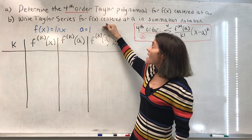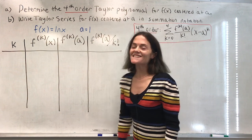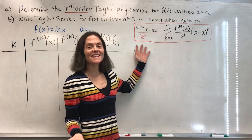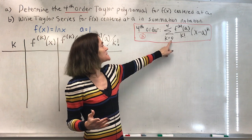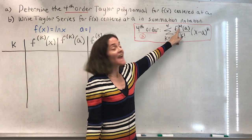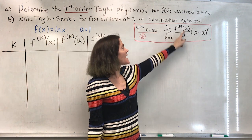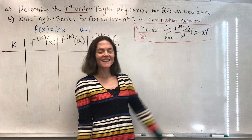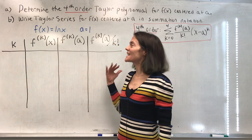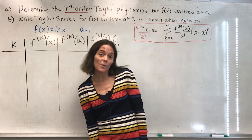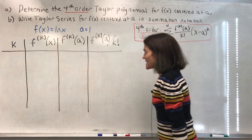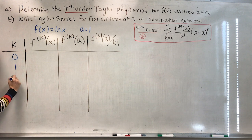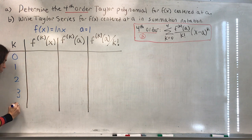We will also write the Taylor series in summation notation. To remind you, the definition of the fourth order Taylor polynomial: we sum k equals 0 to 4, and we have the kth derivative evaluated at a, divided by k factorial, times x minus a to the k. I make this chart to organize my work, as we did in class.